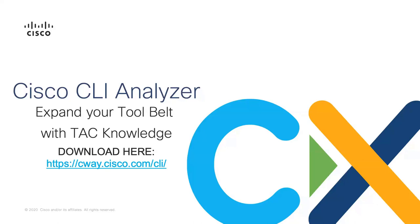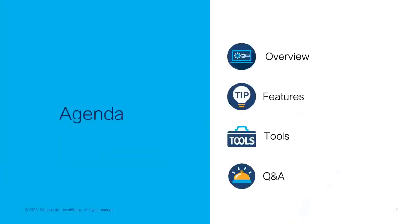We're going to run through today's presentation covering a handful of different aspects of the tool. First, we'll go through an overview and some of the history behind the Cisco CLI Analyzer. We'll look at key notable features — there are a lot, so we won't cover everything, but we'll cover the most useful and most pertinent. Then we'll deep dive into the tools present within the CLI Analyzer and how you can use them to optimize and troubleshoot your network. We'll finish with a Q&A session.